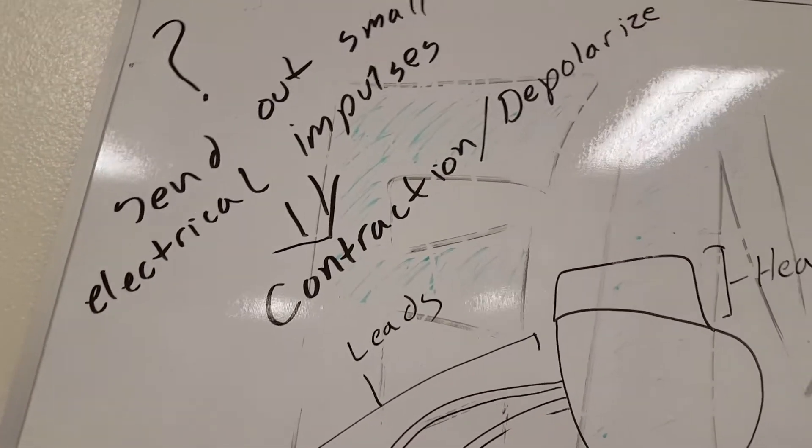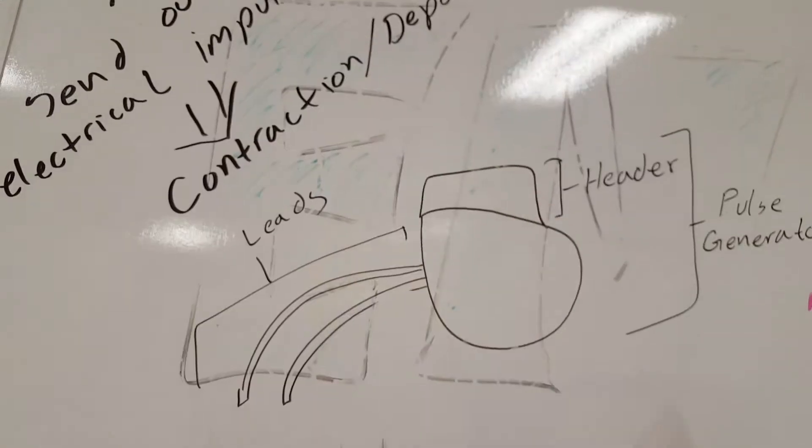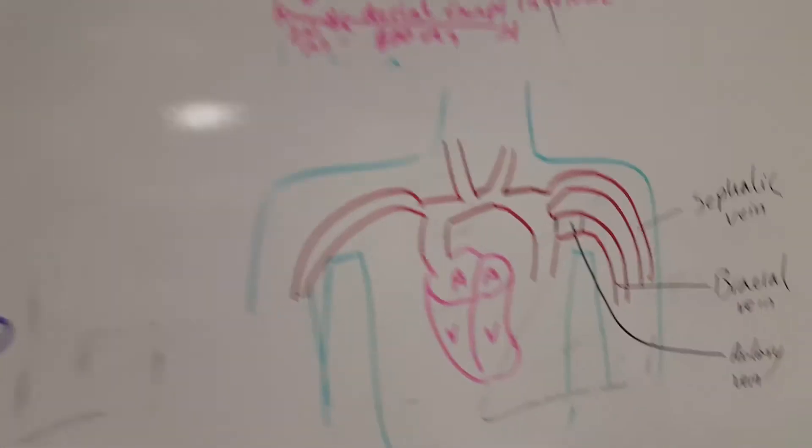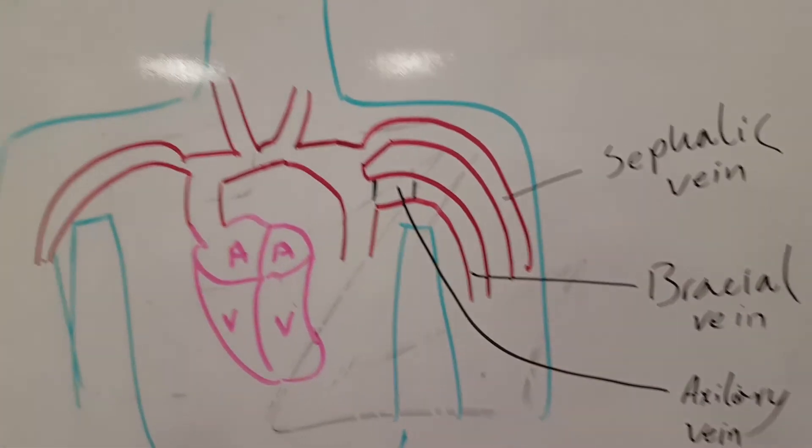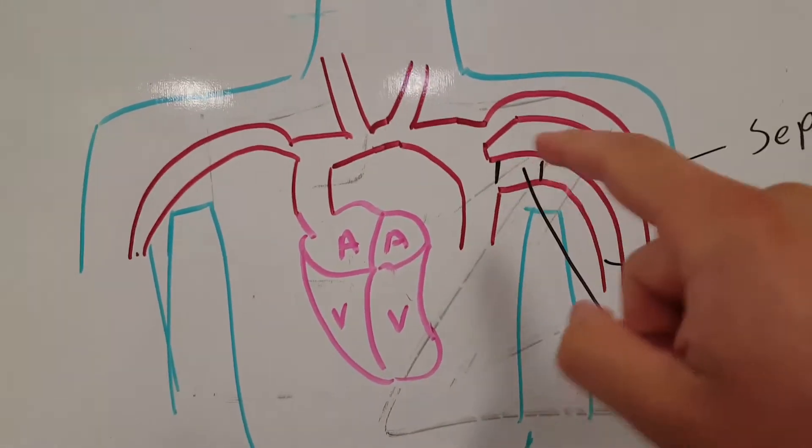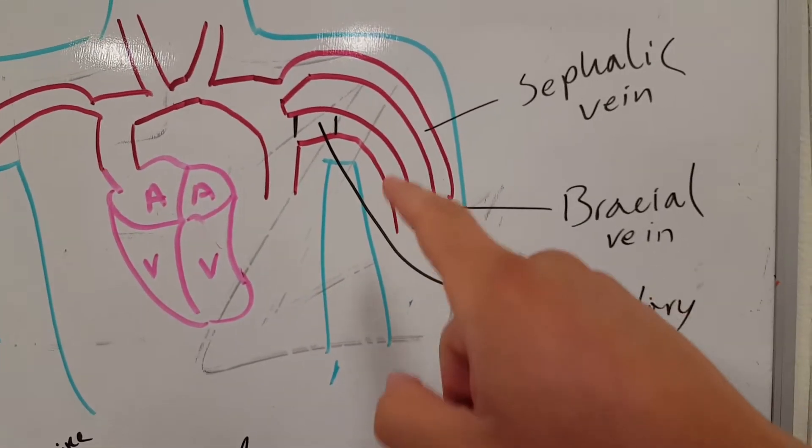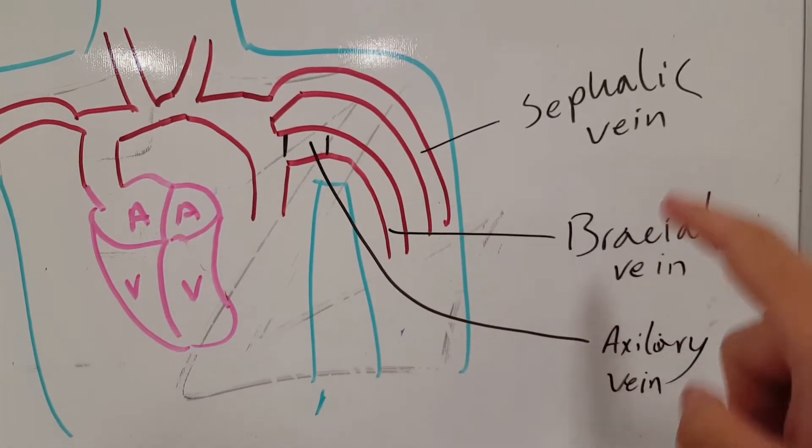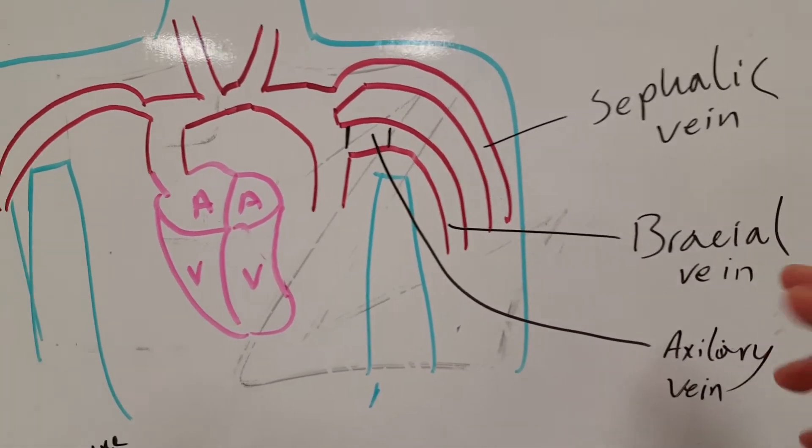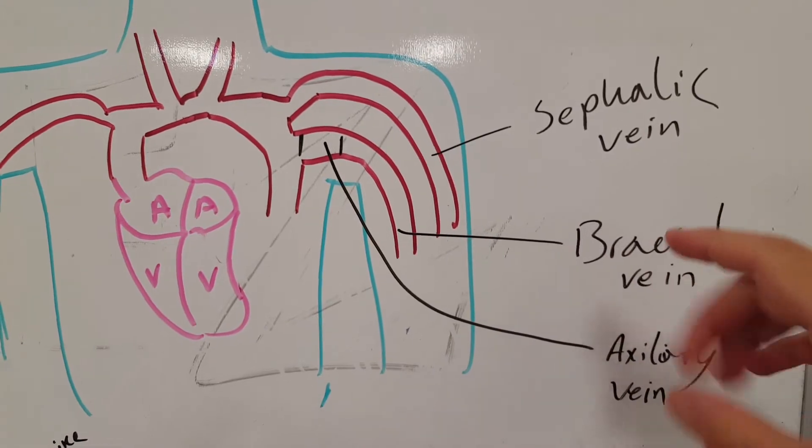Okay, so usually you'll see the pacemaker on the left side of your patient's chest. And the way it works is that you have your cephalic vein - now this may not be spelled right but it's okay, it's not an English class guys, and it's free, so don't worry about it.